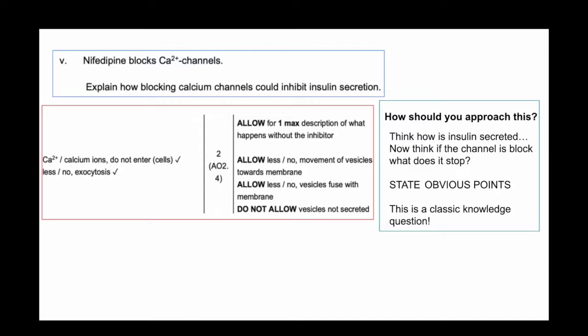So how should you approach this? Well, you think: How is insulin secreted? And then once you think of the steps, you think, okay, if the channel is blocked, what is this stopping? This is why it's very important to state obvious points, because in the mark scheme it says 'calcium ions do not enter the cell.' Many people do not actually write that point.